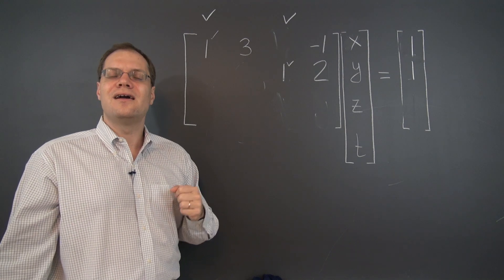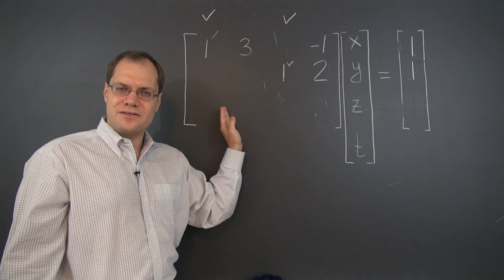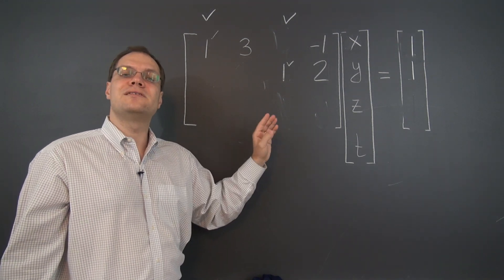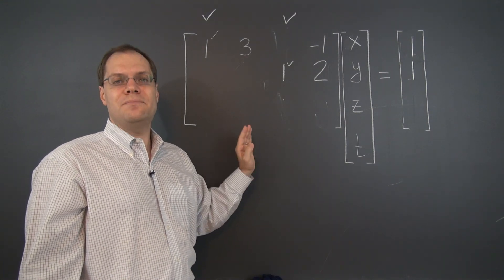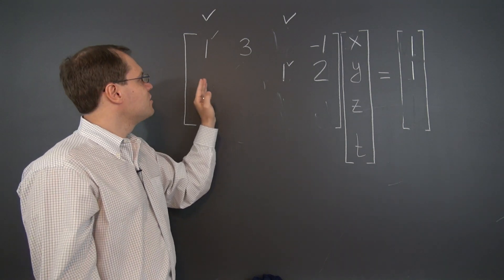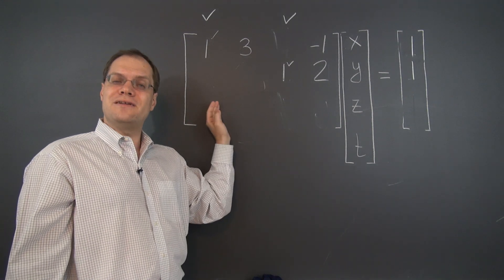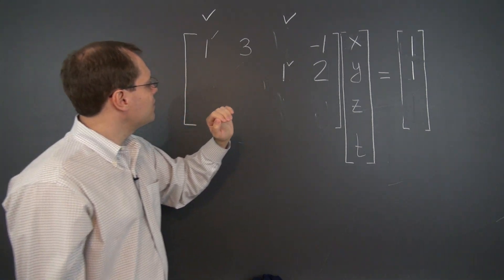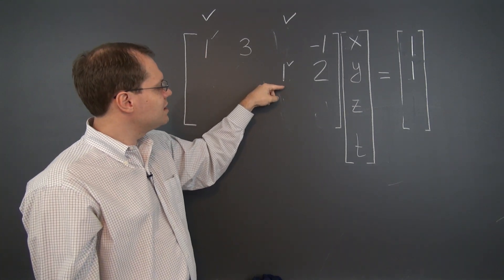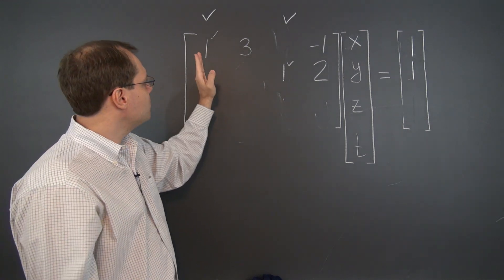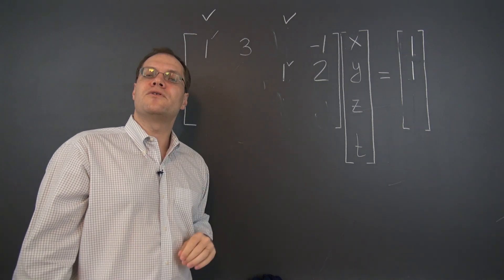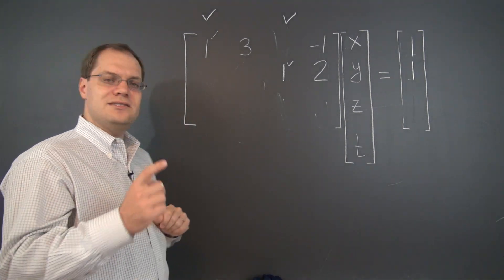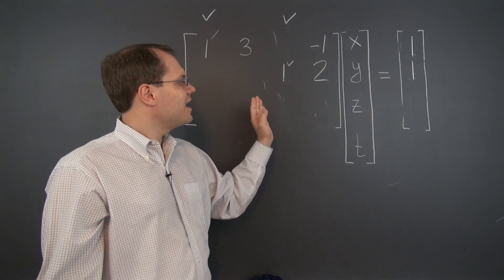Reversing this argument: the columns that are linearly independent from the columns before them will end up being pivot columns. For example, column two was three times column one and is therefore linearly dependent on the prior columns, so it will not get a pivot. Column three was linearly independent. Column four was minus column one plus twice column three — you can rewind and check that this relationship holds in the original matrix and continues to hold after elimination.